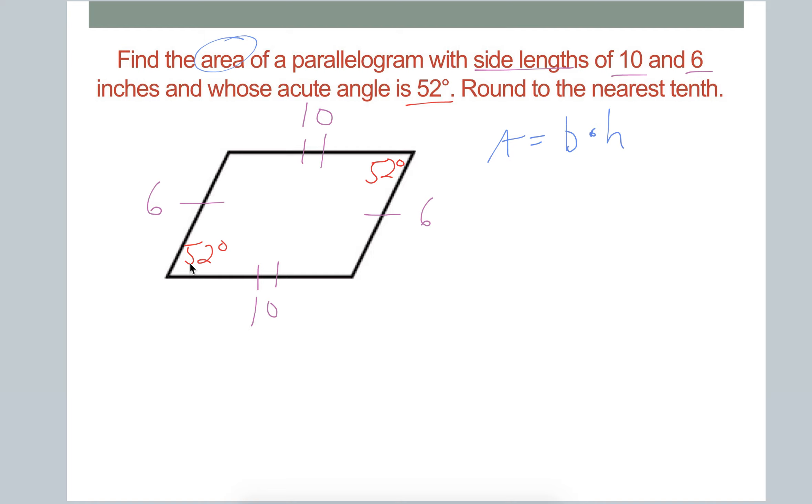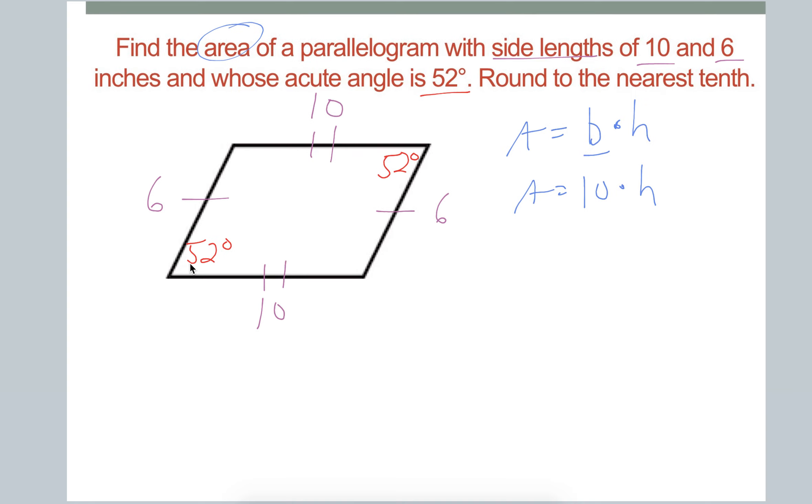So what we can do is call this base of 10, the base, and then we can find the height by dropping down a length that is perpendicular to that base and calling it H for height. Now, if I find this H for height, then I can use this as the base, this as the height, and then calculate the area.